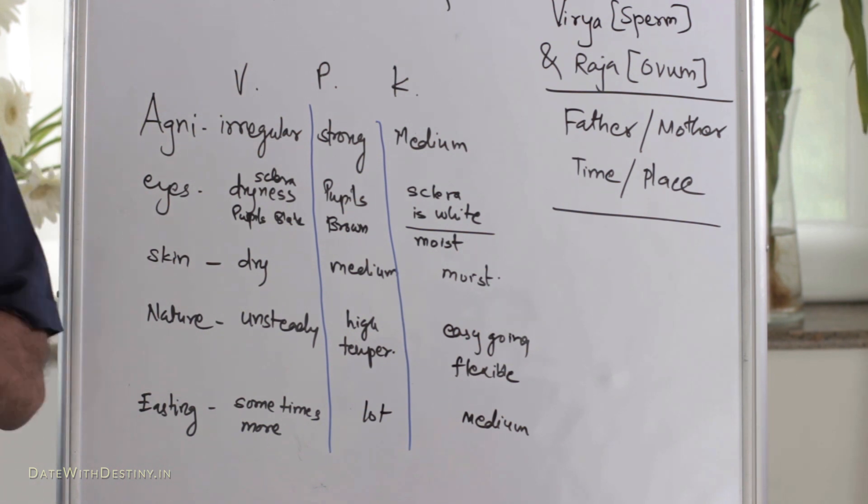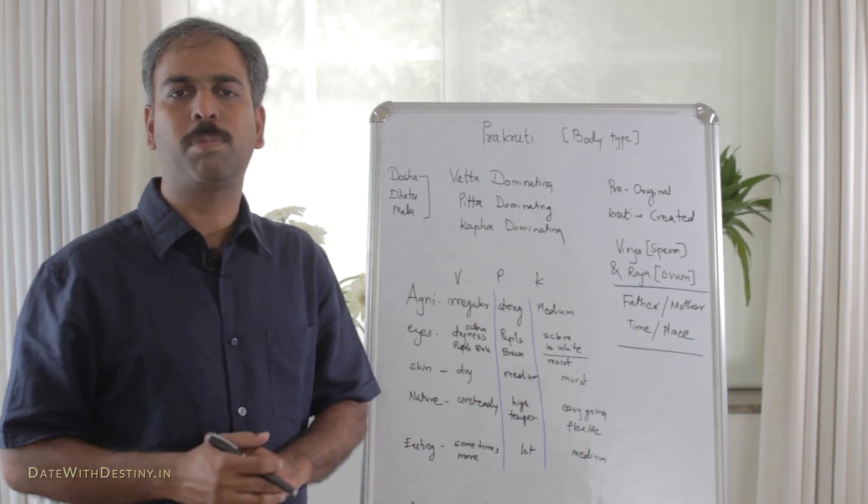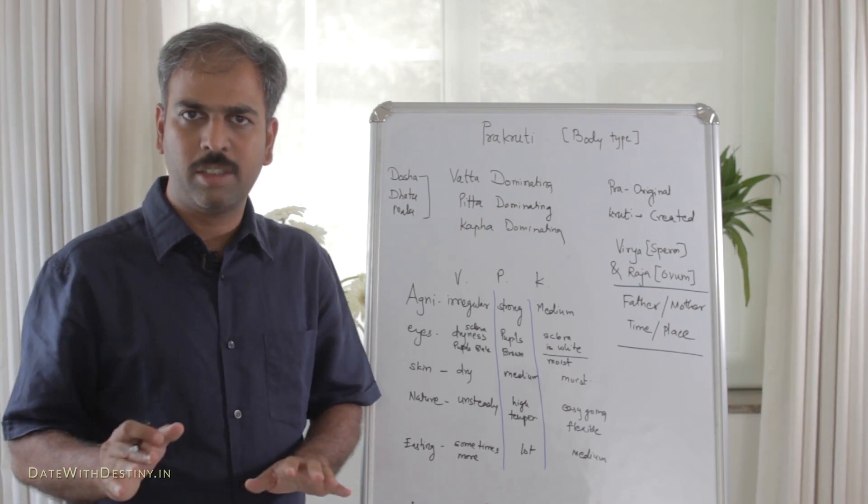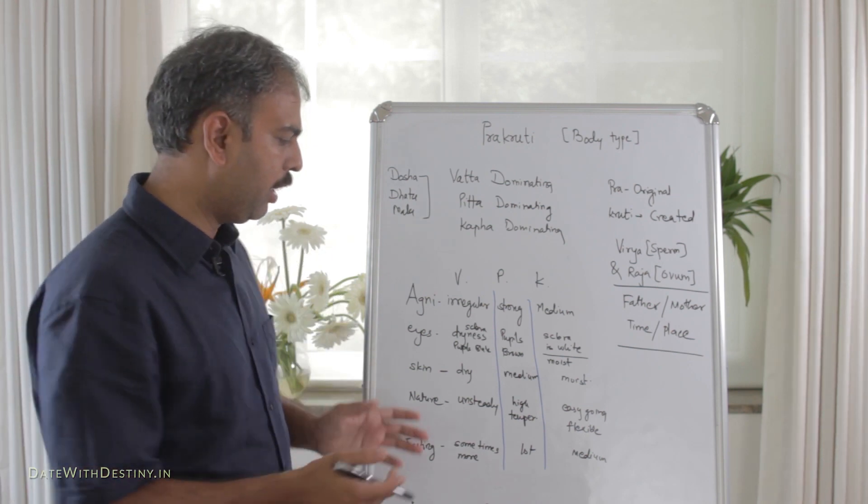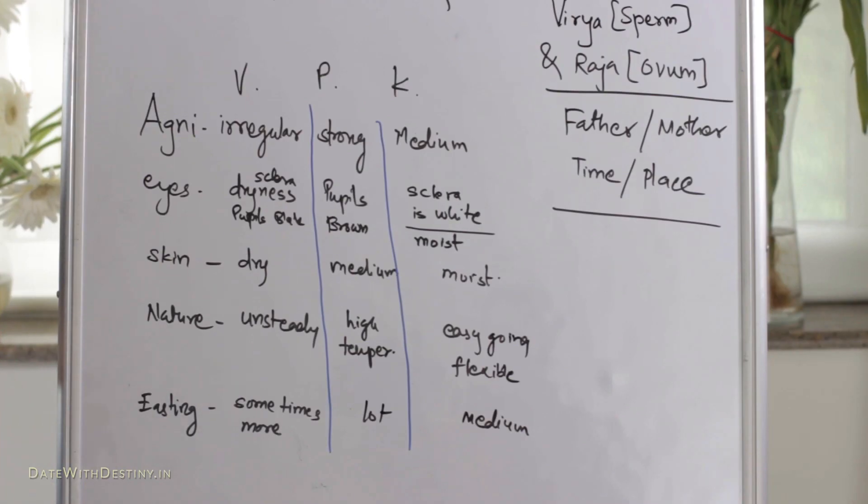In general skin texture, if we see, in Vata Prakruti, it is very dry. Then in Pitta Prakruti, it is medium, and in Kapha Prakruti, it is very moist.